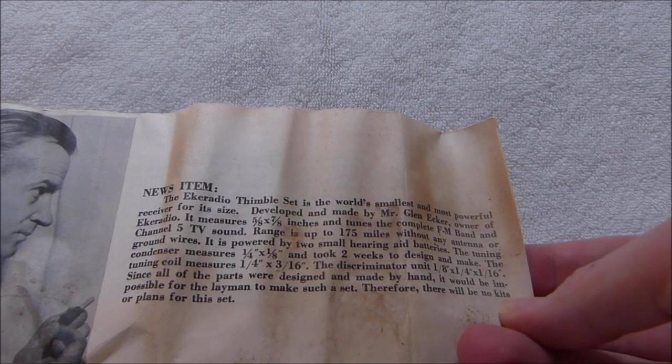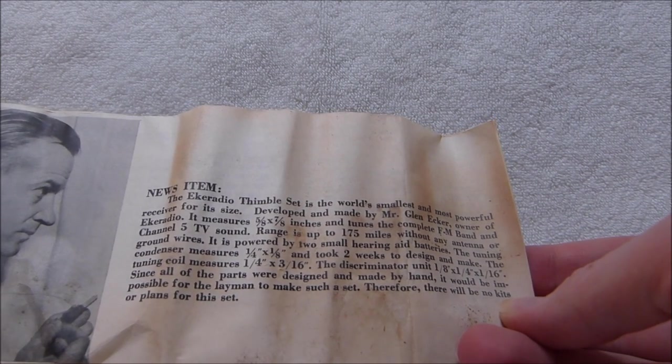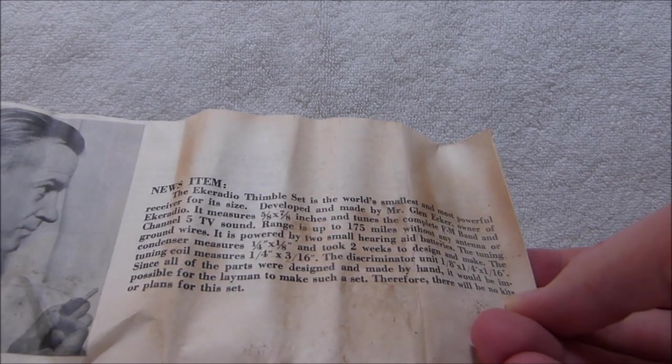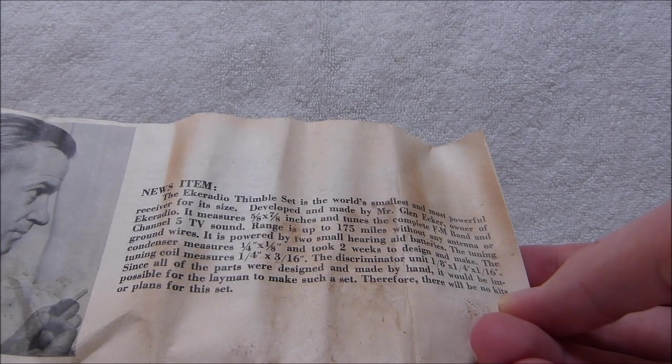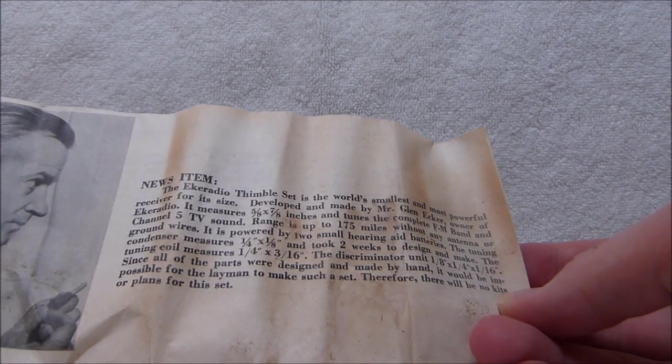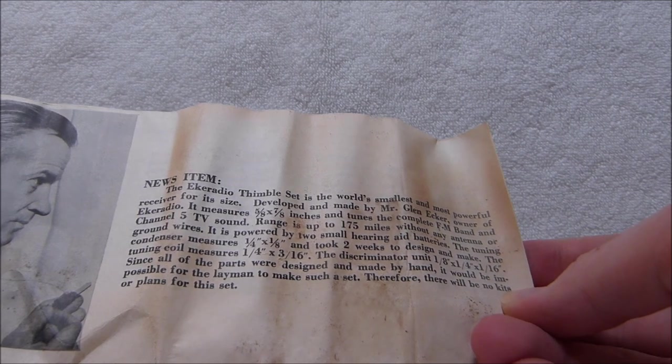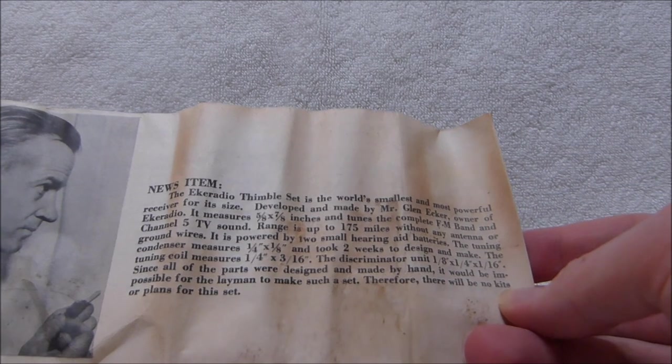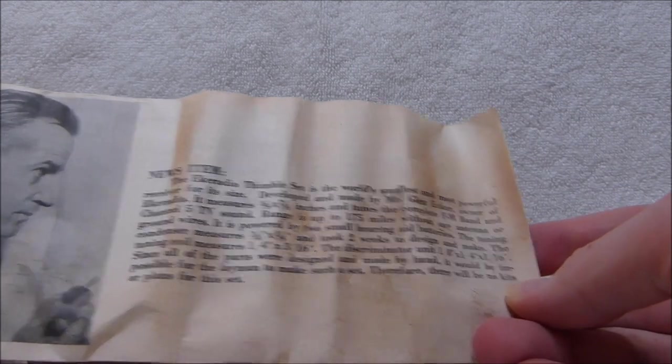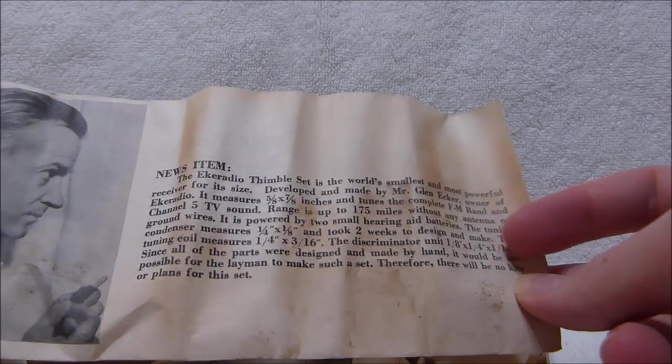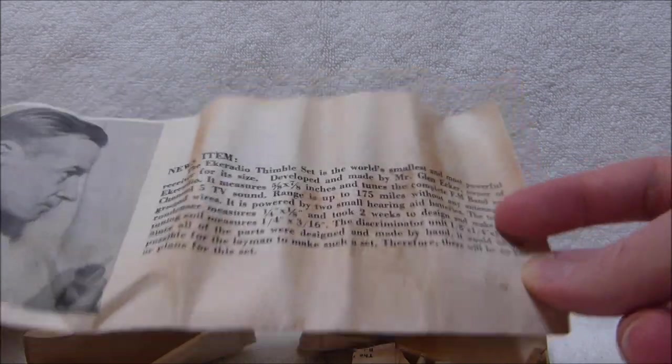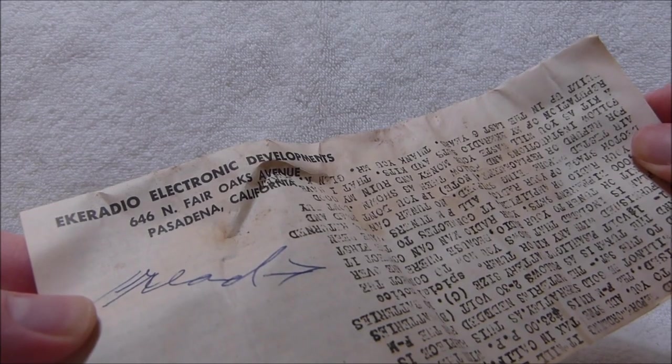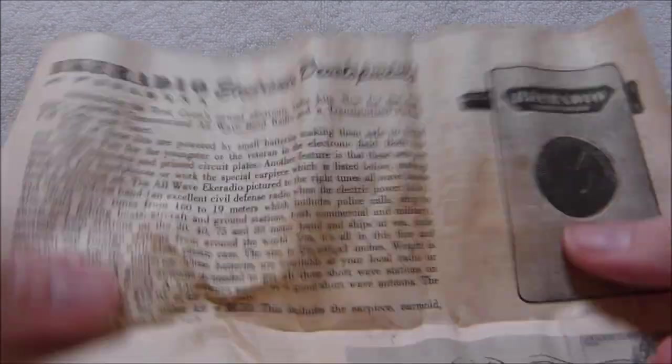I'm not going to read this whole thing to you. You can just pause and read it if you want. But at the bottom here it says, since all the parts were designed and made by hand, it would be impossible for the layman to make such a set. Therefore there will be no kits or plans for this set. So basically, Mr. Ecker here is just announcing that he made the world's smallest radio and wants you to appreciate his achievement. Hopefully this is easy enough to read for you guys.